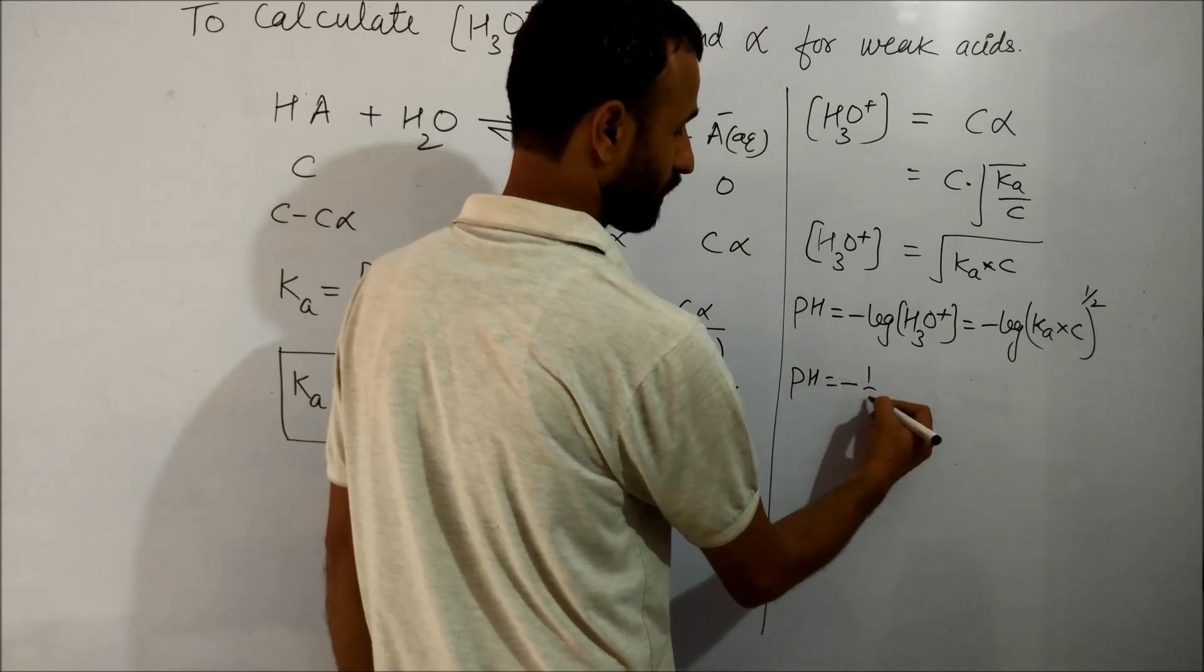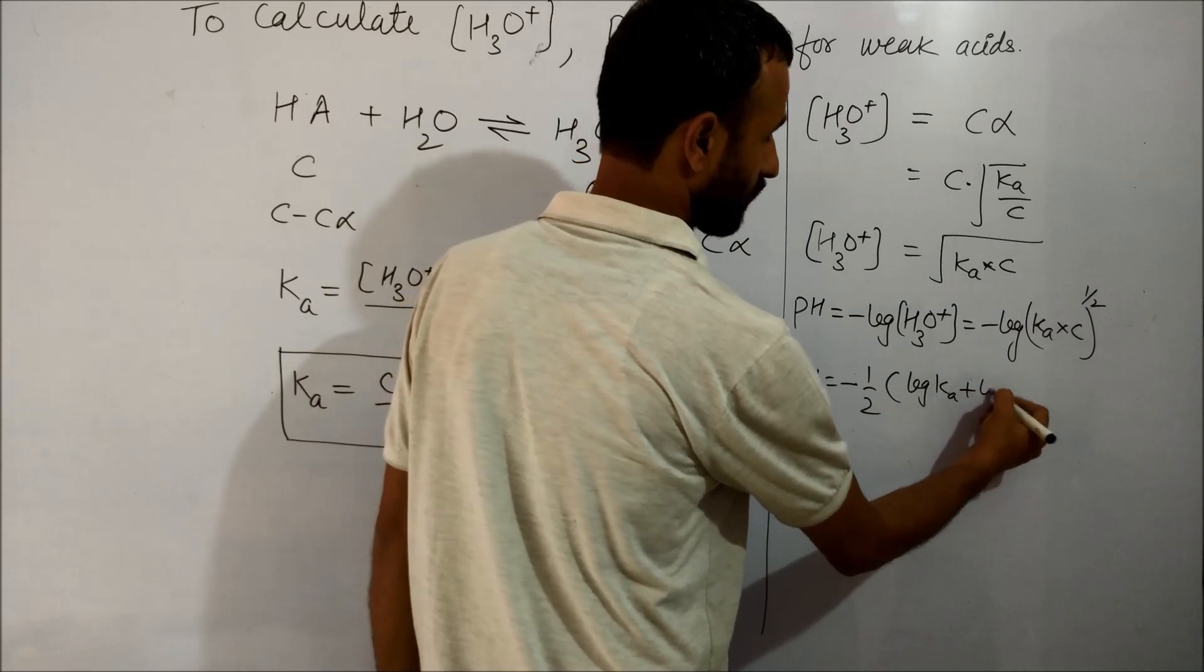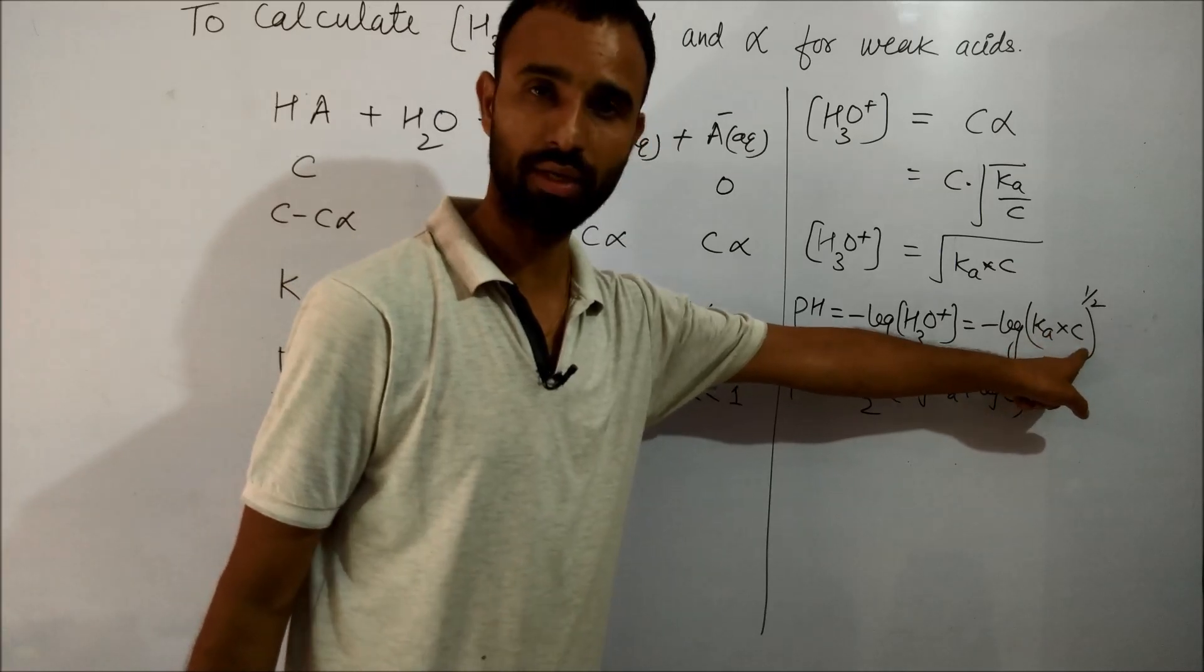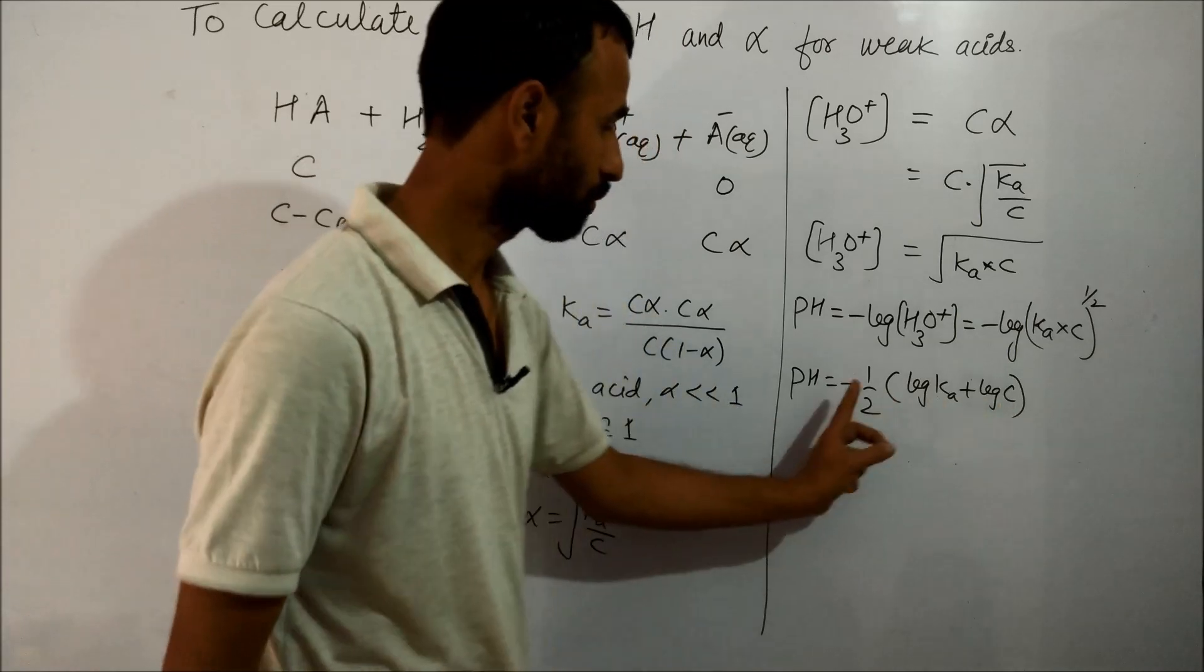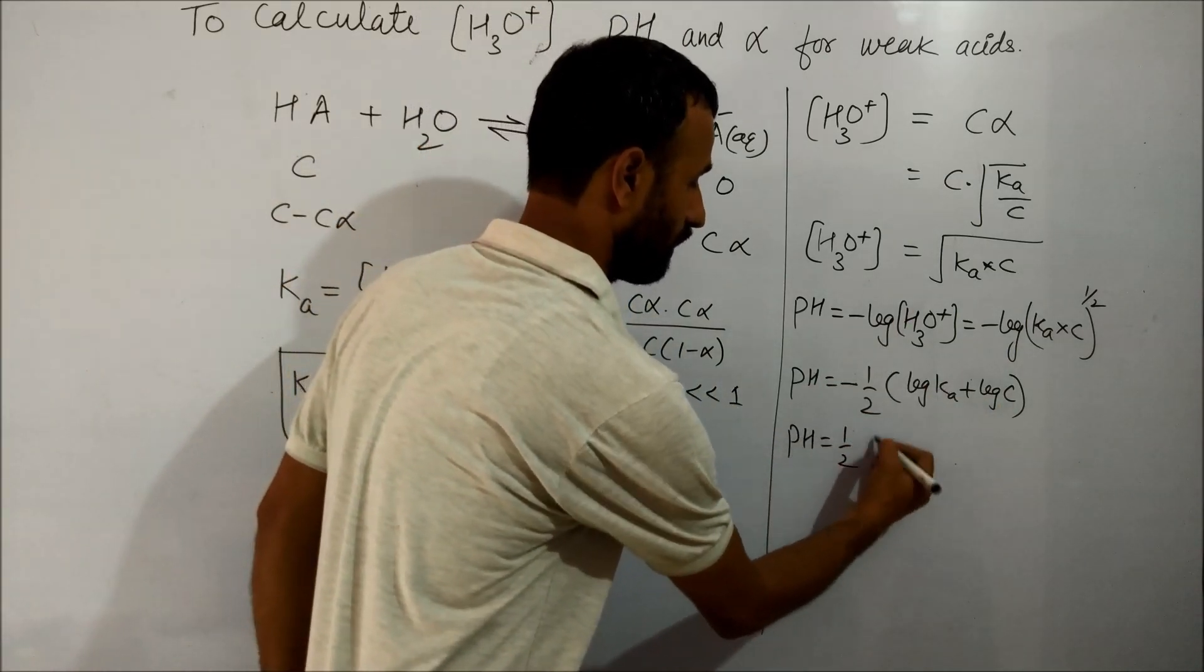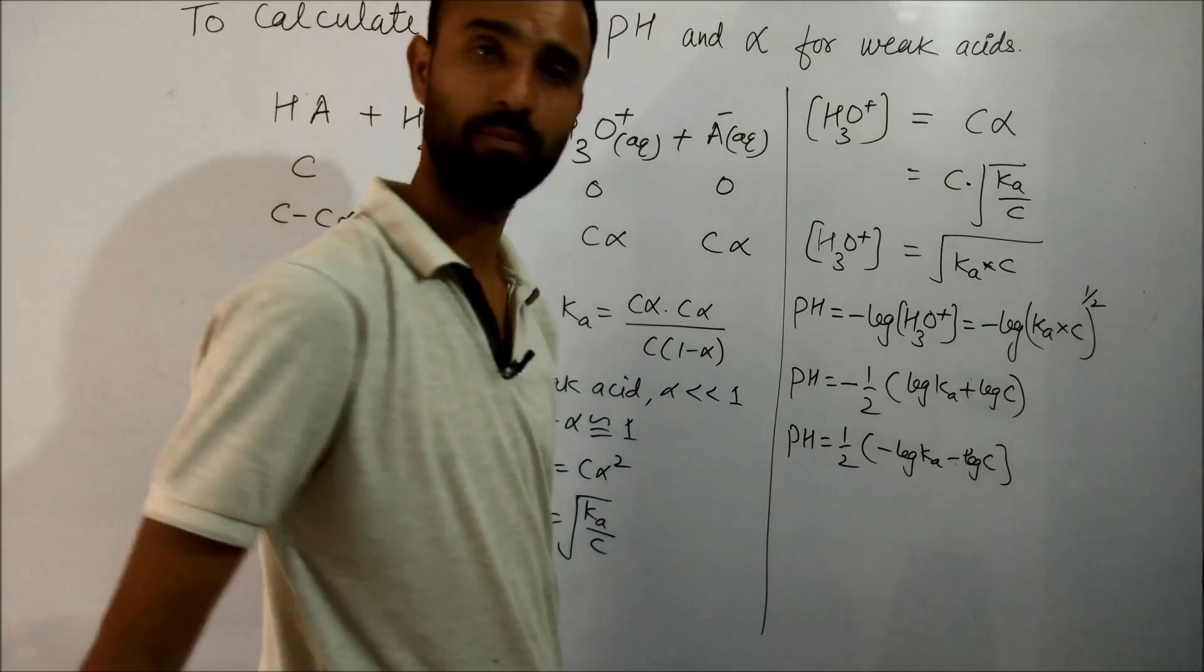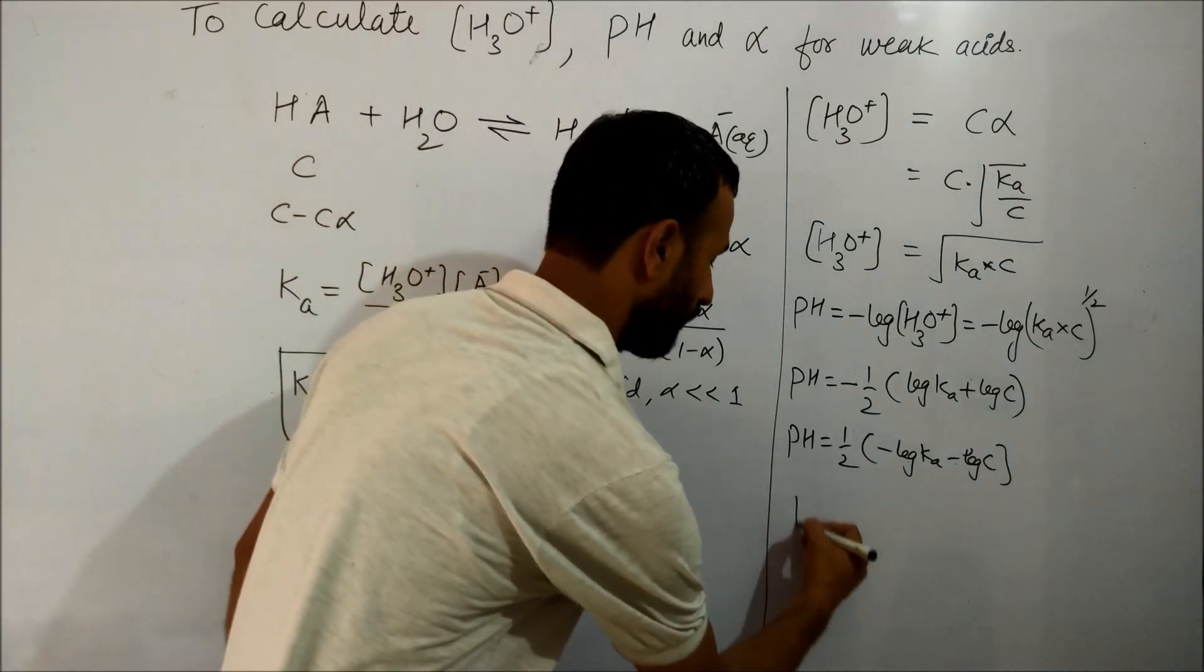It becomes minus half log of Ka plus log of C. Since log(A × B) equals log A plus log B, distributing the minus inside gives minus log Ka minus log of C.